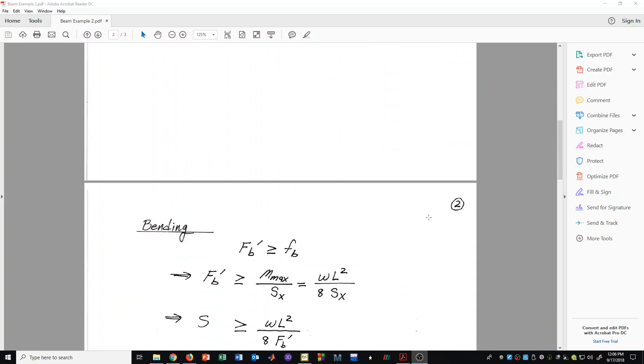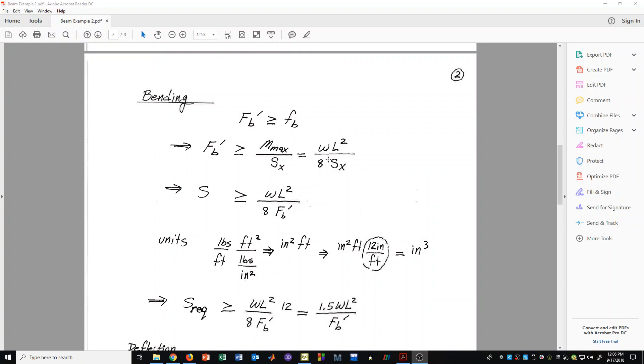We now can move to bending. Again, we start with the allowable stress design formula. Fb' must be greater than or equal to Fb. We can then substitute in for the actual bending stress the maximum moment along the length of the beam divided by the section modulus. That is equal to WL squared over 8. For a simply supported beam, the maximum moment is WL squared over 8, and that is divided by the section modulus. So now we can solve for that section modulus. S needs to be greater than or equal to WL squared over 8 times Fb'.